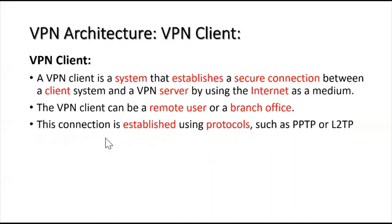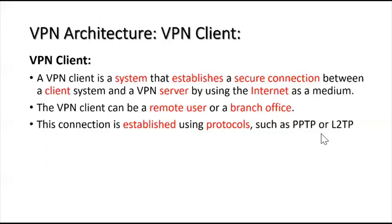The VPN client is a system that establishes a secure connection between the client system and the VPN server using the internet as a medium. The VPN client sends a request to the VPN server, which then authenticates it. VPN clients can be remote users, branch offices, mobile users moving from place to place, or business partners. This connection is established using protocols such as PPTP and L2TP. Once the VPN server authenticates the VPN client, a secure connection is established through these protocols.